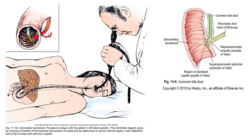ERCPs are used to diagnose biliary and pancreatic pathologic conditions with a fiberoptic endoscope passed through the mouth into the duodenum under fluoroscopy. This method is useful when ducts are not dilated and the ampulla where the common bile duct empties into the duodenum is not obstructed. The patient's throat is sprayed with a local anesthetic to make passage of the endoscope easier, and the hepatopancreatic ampulla is cannulated with video guidance. There is a camera on the end of the scope that the physician views to help with visualization. Once the cannula has been successfully inserted into the ampulla, contrast is injected into the common bile duct, and spot and/or conventional images are taken as needed.